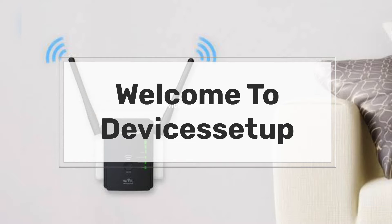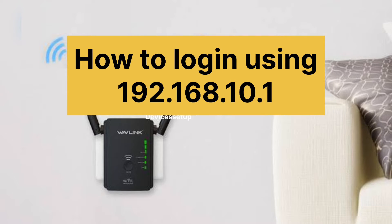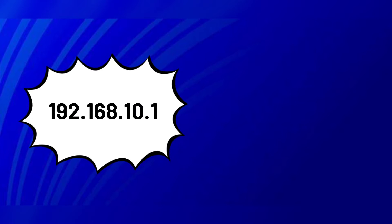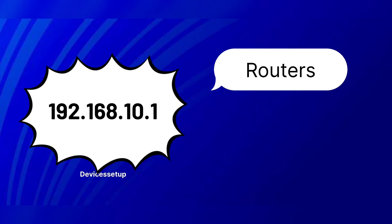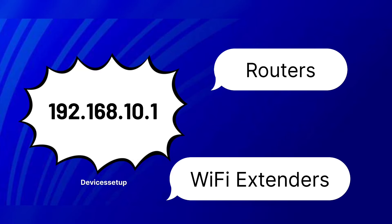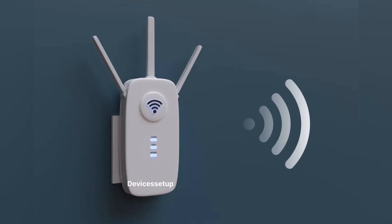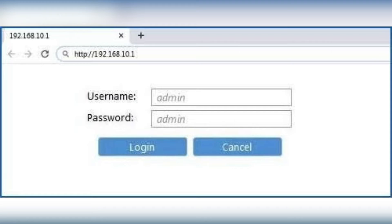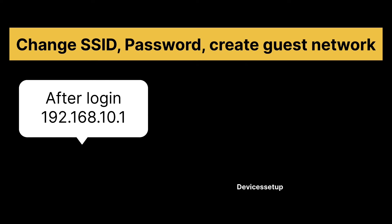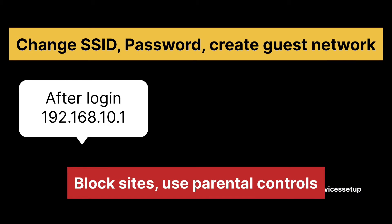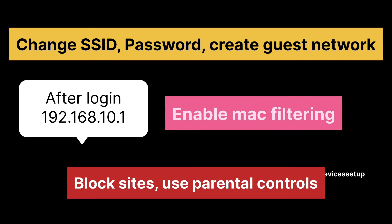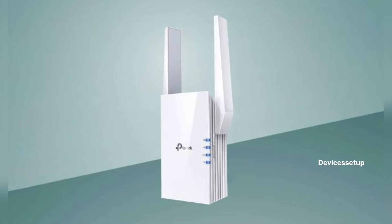Welcome to device setup. Today we will learn how to log in to your device using the 192.168.10.1 IP address. This IP address is used mainly by both routers and Wi-Fi extenders, so you can use it for setting up your devices and to log in to your web interface. Once logged in, you will be able to change the SSID, password, create a guest network, block sites, use parental control, enable MAC filtering, and more.